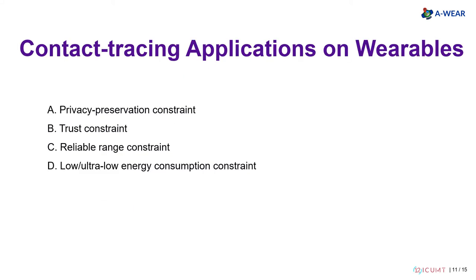In order to be adopted by a free market, a wireless contact tracing application must comply with a fair trade-off between several design constraints. The privacy preservation constraint means that in order to preserve the user's privacy, the application must obey the data minimization principle.